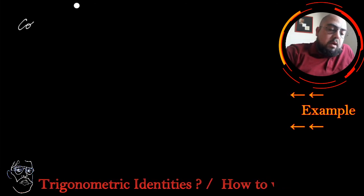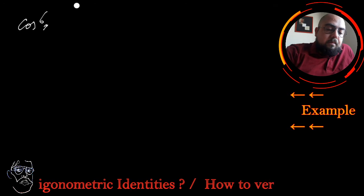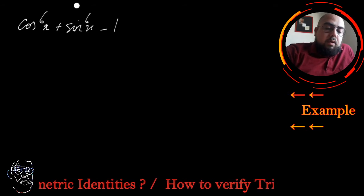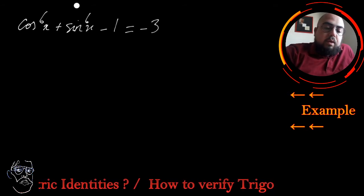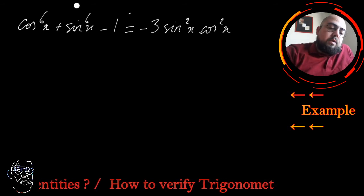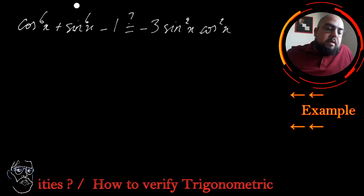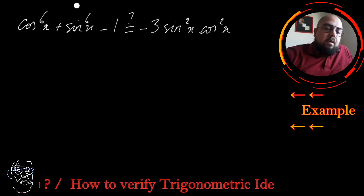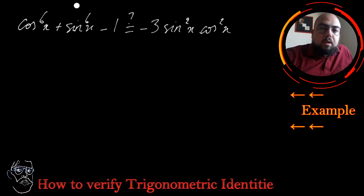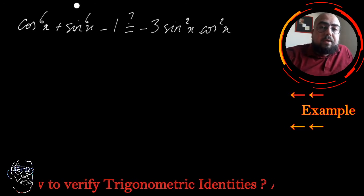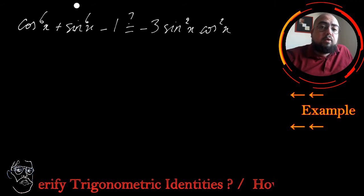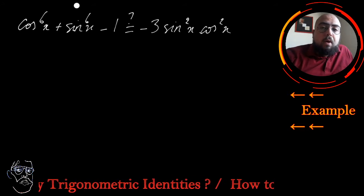The seventh and final example is a bit more challenging. We must demonstrate that cosine to the power of 6 of x plus sine to the power of 6 of x minus 1 equals negative 3 sine squared x times cosine squared x. Since we have powers of 6, I'll work with cosine squared x plus sine squared x to the power of 3, which produces those sixth powers when expanded.